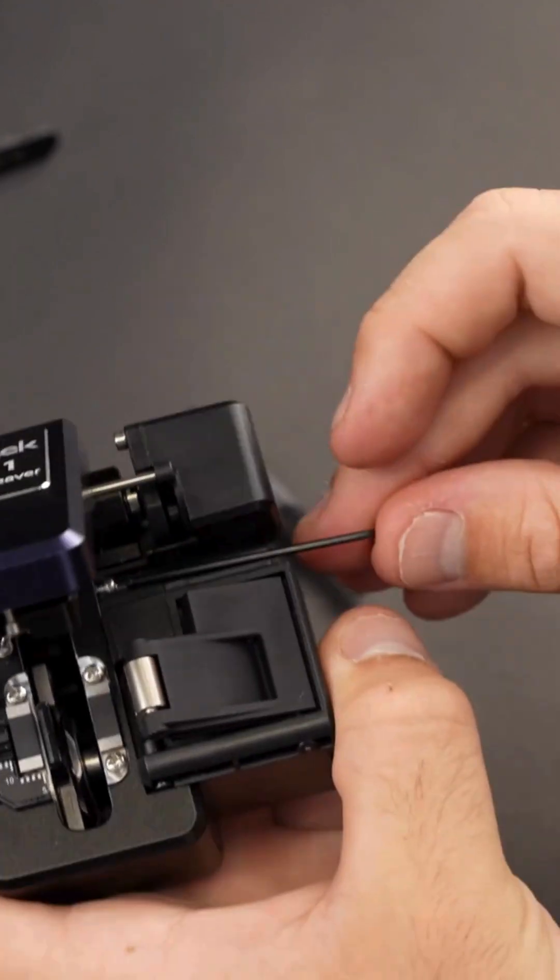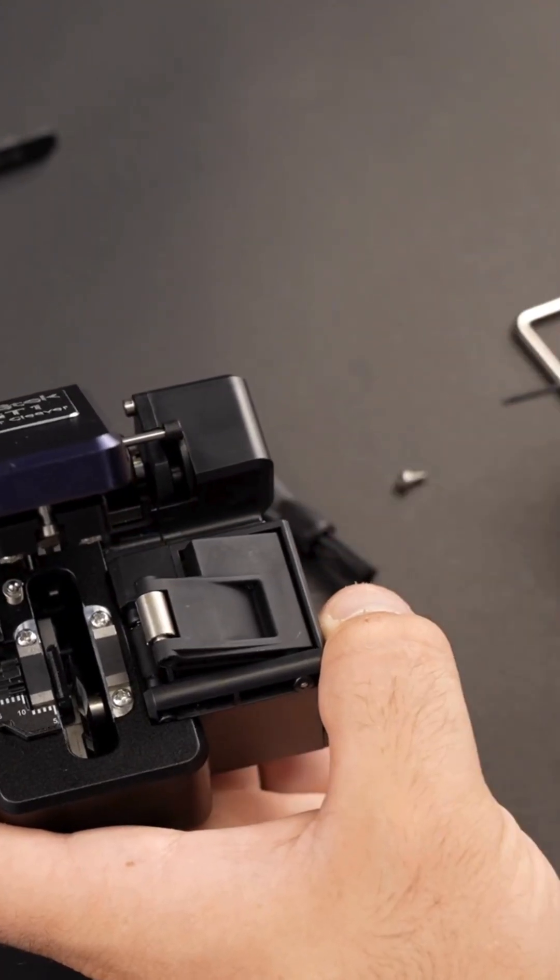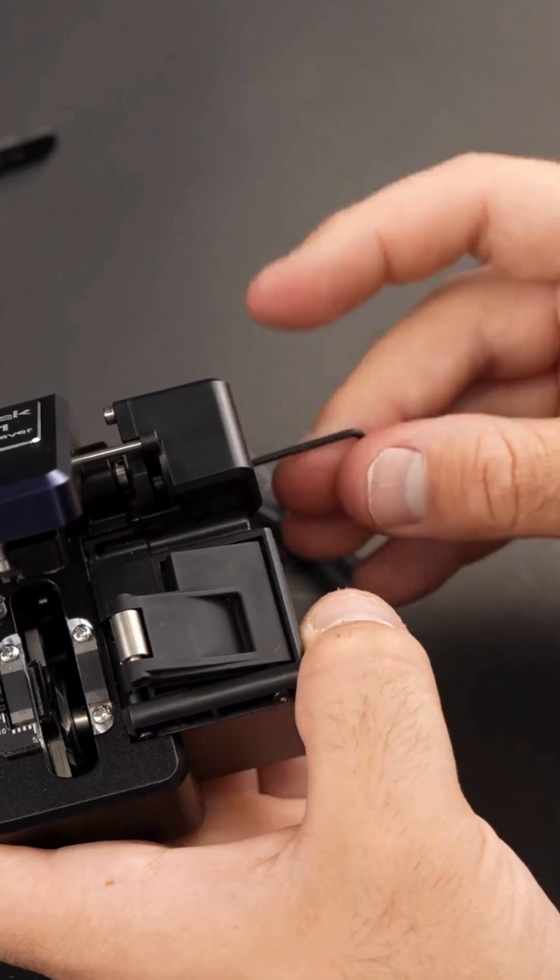Take the small screwdriver provided in your cleaver kit and begin by loosening the two screws that hold the blade assembly and fiber bin in place.